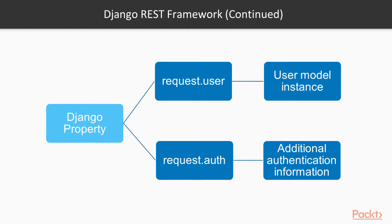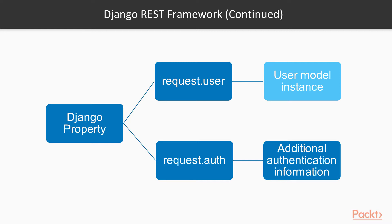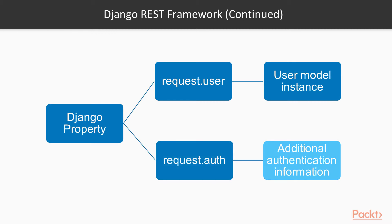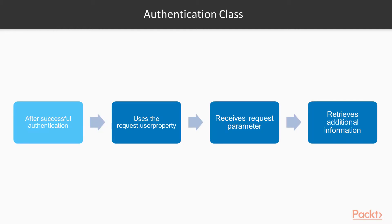The first property is request.user — it is the user model instance. We will use an instance of the Django.contrib.auth.user class, that is a Django user instance in our examples. Next is request.auth, which provides additional authentication information, such as an authentication token.